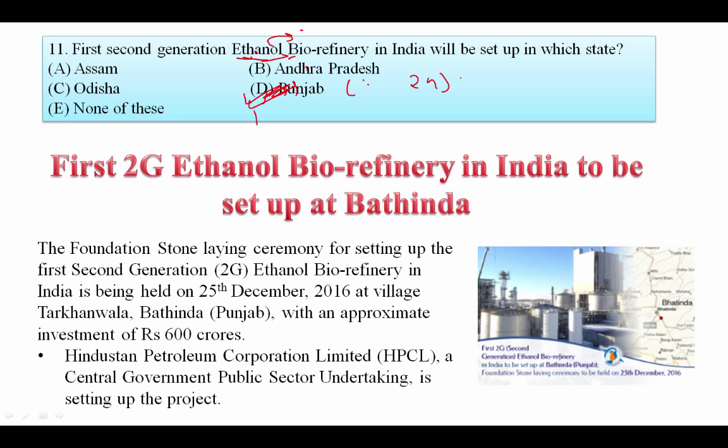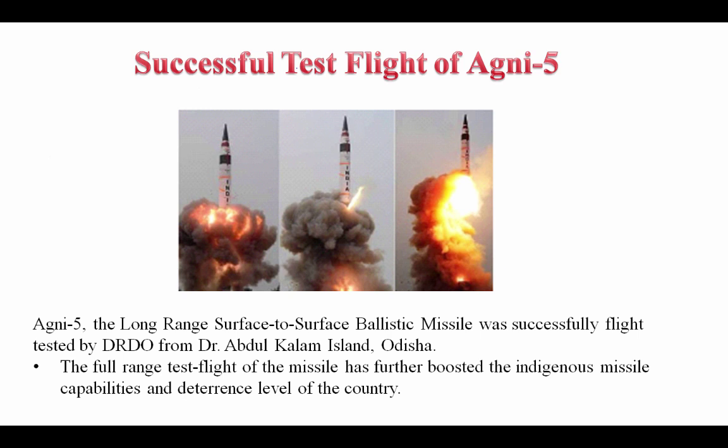First second-generation ethanol bio refinery in India will be set up in which state? The foundation stone laying ceremony for the first 2G ethanol bio refinery in India was held on 25th December 2016 at village Tarkhanwala, Bathinda, Punjab, with an approximate investment of rupees 600 crore. Your answer is D, Punjab. Regarding the successful test flight of Agni 5 — the Agni 5 is a long-range surface-to-surface ballistic missile successfully flight-tested by DRDO from Abdul Kalam Island in Odisha, further boosting the indigenous missile capabilities of the country.